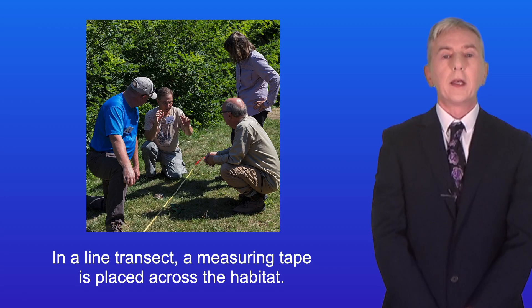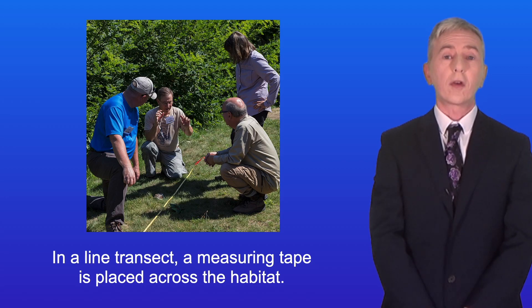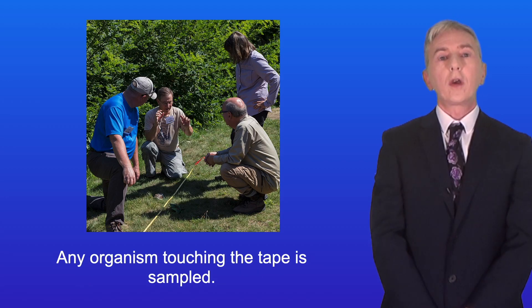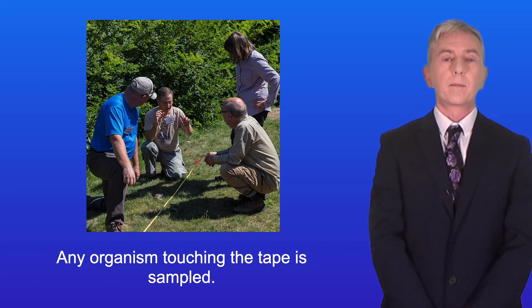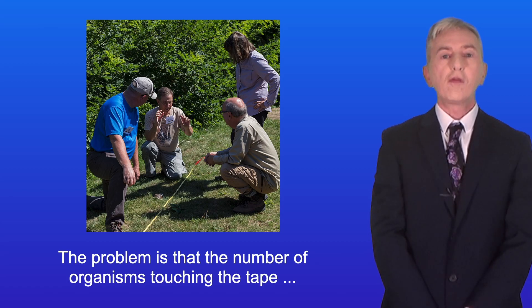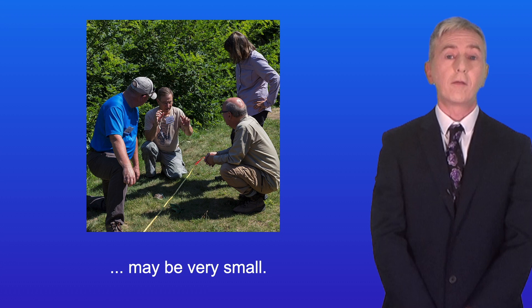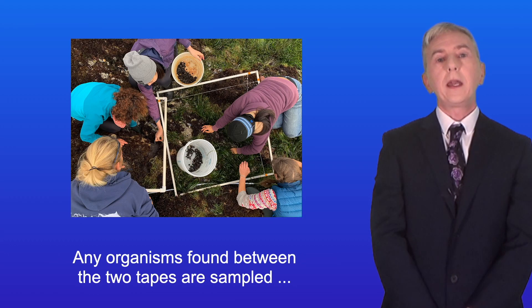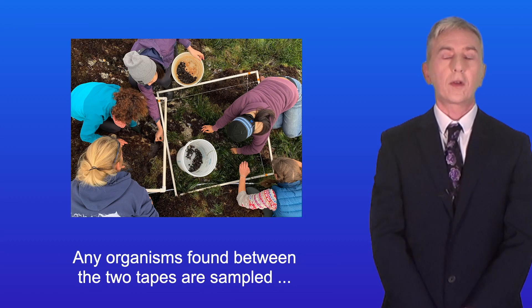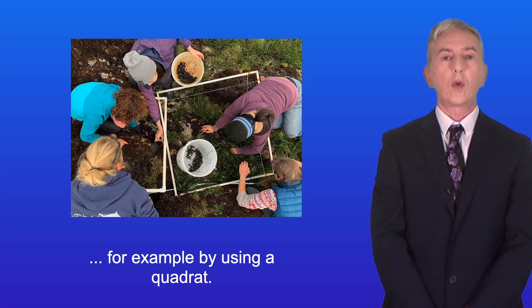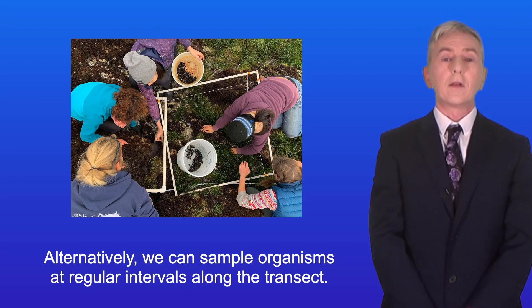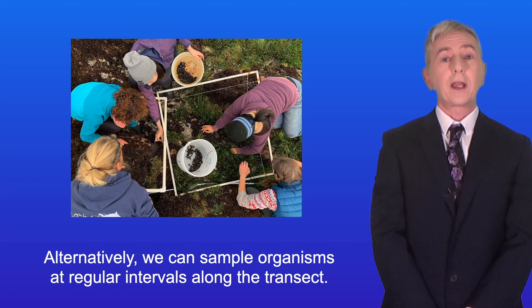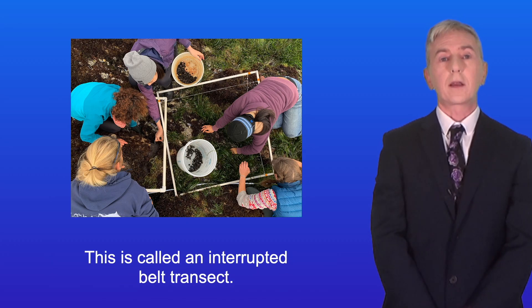Two ways of doing this are a line transect and a belt transect. In a line transect, a measuring tape is placed across the habitat and any organism touching the tape is sampled. The problem is that the number of organisms touching the tape may be very small. In a belt transect, we place two parallel tapes across the habitat and any organisms found between the two tapes are sampled, for example by using a quadrat. Alternatively, we can sample organisms at regular intervals along the transect, and this is called an interrupted belt transect.